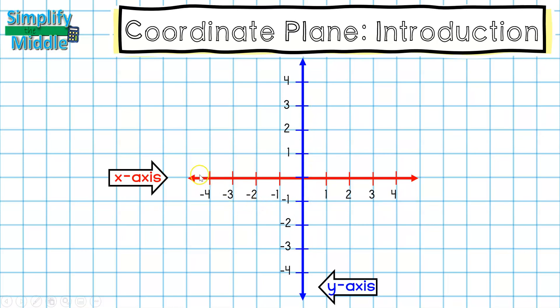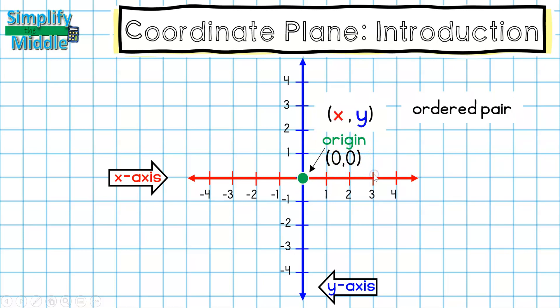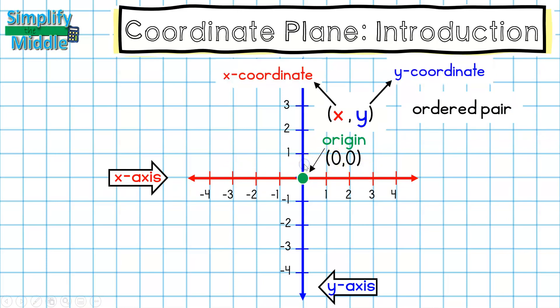There's a point where both the x-axis and the y-axis meet in the center, and this is called our origin. Our origin is also known by the coordinates (0, 0), so we are always going to be starting everything from our origin. Here we have an example of something called an ordered pair.